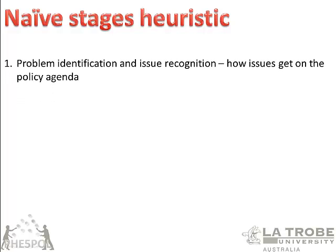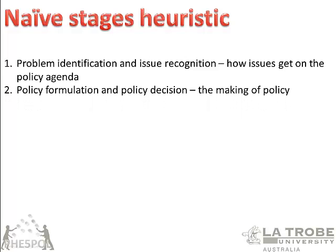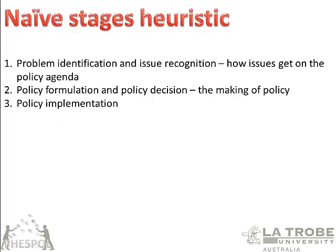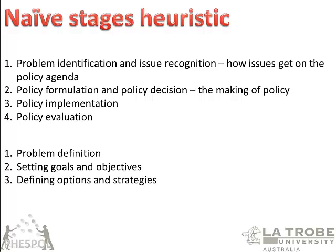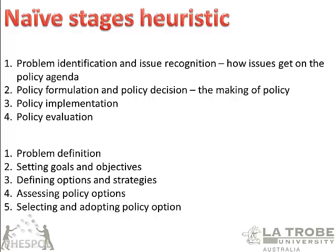This is one way of looking at the different stages. First you identify a problem, you recognize an issue, you recognize how issues get on the policy agenda. You formulate the policy, you decide on it — the actual creation of the policy. Then there is implementation — you just do it — and you evaluate whether the policy has worked. Another way of looking at it: you define the problem, set goals and objectives, define the different options and strategies, assess the policy options, select and adopt the best policy option, implement it, and then there is monitoring and evaluation.